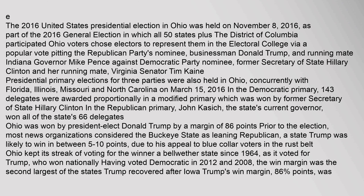Prior to the election, most news organizations considered the Buckeye State as leaning Republican, a state Trump was likely to win by between five to ten points, due to his appeal to blue-collar voters in the Rust Belt. Ohio kept its streak of voting for the winner as a Bellwether State since 1964, as it voted for Trump, who won nationally, having voted Democratic in 2012 and 2008. The win margin was the second largest of the states Trump recovered after Iowa. Trump's win margin was 8.6 percentage points.